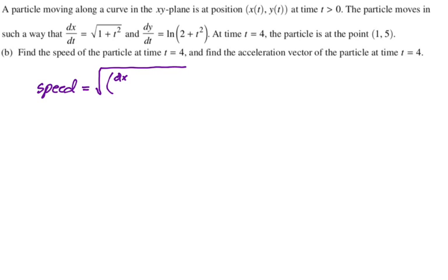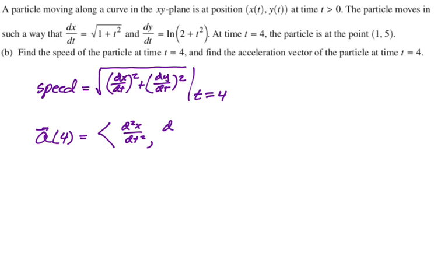I'm going to write it as the square root of dx dt squared plus dy dt squared, and then we're going to evaluate this at t equals 4. I'm going to use the calculator, but I'm going to do one screenshot. So I'm going to answer, I'm going to write the work for the acceleration vector first. So acceleration vector is going to be, so at 4, we're going to do the second derivative of x with respect to t, comma the second derivative of y with respect to t.